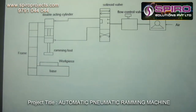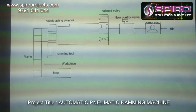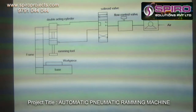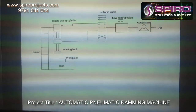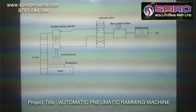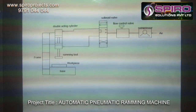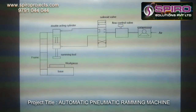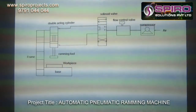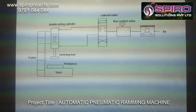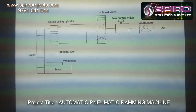The compressor is used to compress the incoming air from the atmosphere. The flow control valve is used to control the pressure and flow of the air from the compressor. The solenoid valve will activate by using the timer circuit, which is set by the human. When the solenoid gets activated, the air from the flow control valve flows through the solenoid to the double-acting cylinder. The double-acting cylinder will activate, moving up and down by using compressed air.